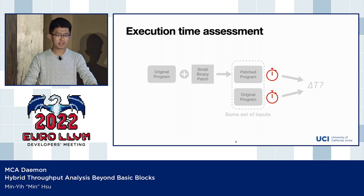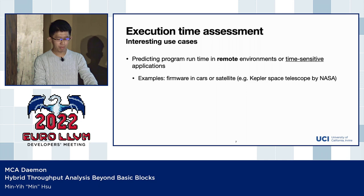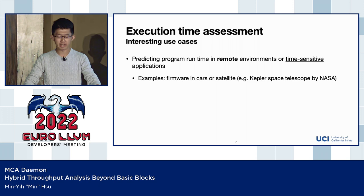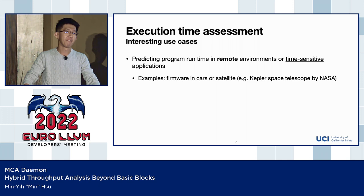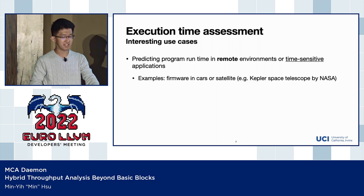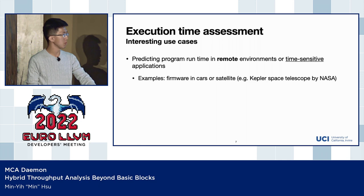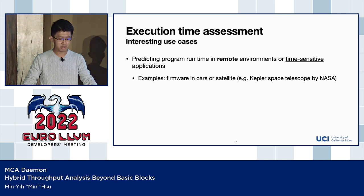You might wonder why I use the word 'assessment' rather than 'measurement' — where you could just grab a stopwatch and measure execution time. Well, in many cases including our use cases, you cannot do that. In an embedded system or remote environment, it's often really difficult to run your binary right away. For instance, we talked to folks from NASA: in their Kepler space telescope, after launch at 150 million kilometers away, they found a calculation that would stall the entire satellite. In that circumstance, you cannot easily reach the remote satellite. Also, for time-sensitive applications, people want tight boundaries on execution time before deployment.